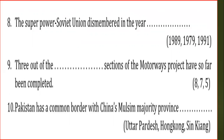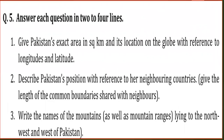Question number 3, true/false, is given in your book — you will do it yourself. Question number 4, match the columns — you will also do this yourself. Question number 5, short questions: answer each question in 2 to 4 lines, but you will write a complete answer, not only the key answer.